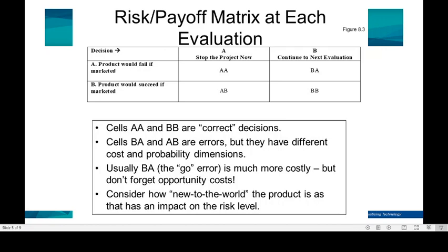When you evaluate, this is the risk or payoff matrix, which shows four concepts or four outcome decision options. There is a type of success or failure, and two decision options: move on or kill the project. In this matrix, the AA cell and the BB cell are fine — either we drop a concept that would ultimately fail, or we continue on a concept that would ultimately succeed.